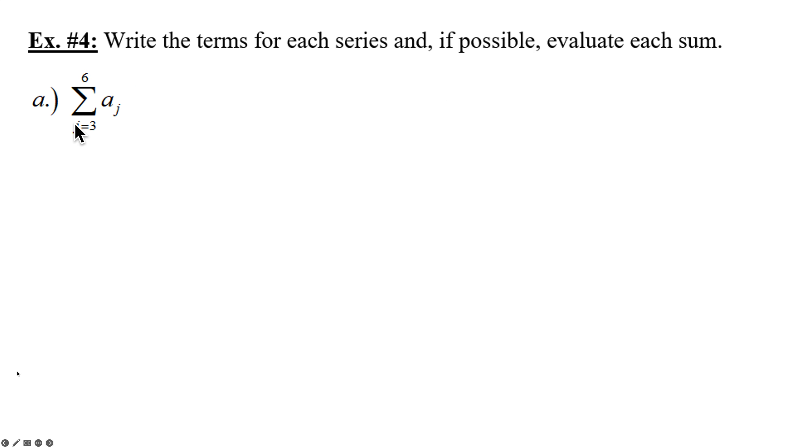Example 4, part A. It says write out the terms of each series and, if possible, evaluate each sum. So now you can see here we're starting at 3 and not 1. So we're going to have j is 3, 4, 5, and 6. We're going to put that in for j. So we're going to have a sub 3 plus a sub 4 plus a sub 5 plus a sub 6. They didn't tell us anything about what the a sub n function is or a sub j function. So we'll just leave it at that. We've just listed the terms. We can't do anything more to evaluate.